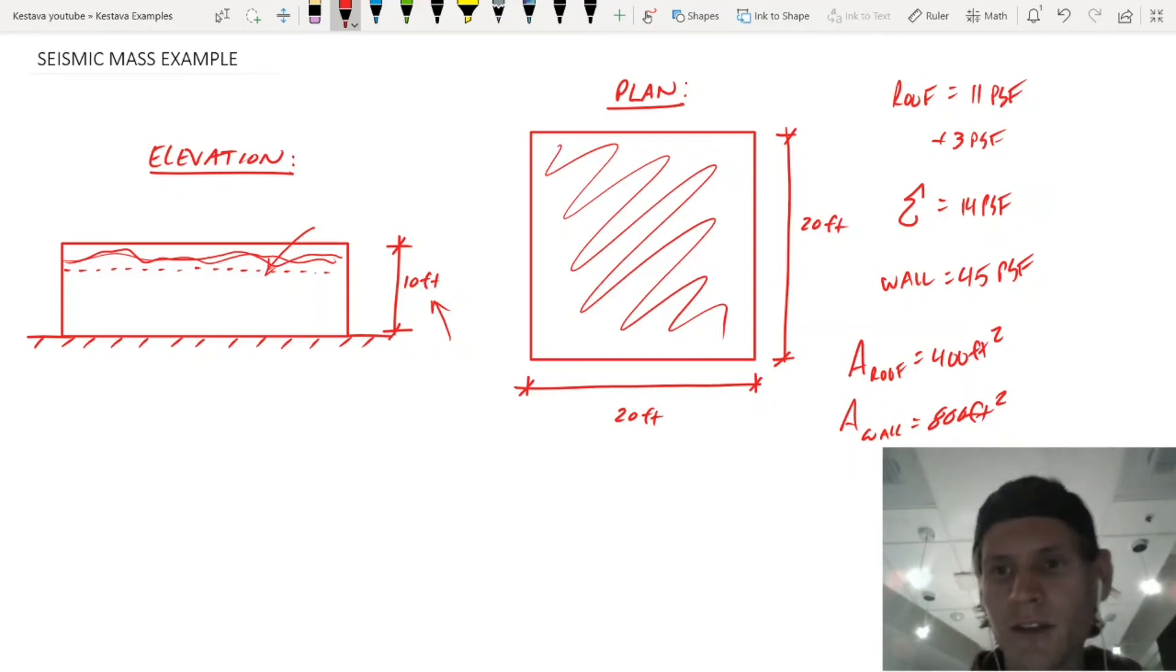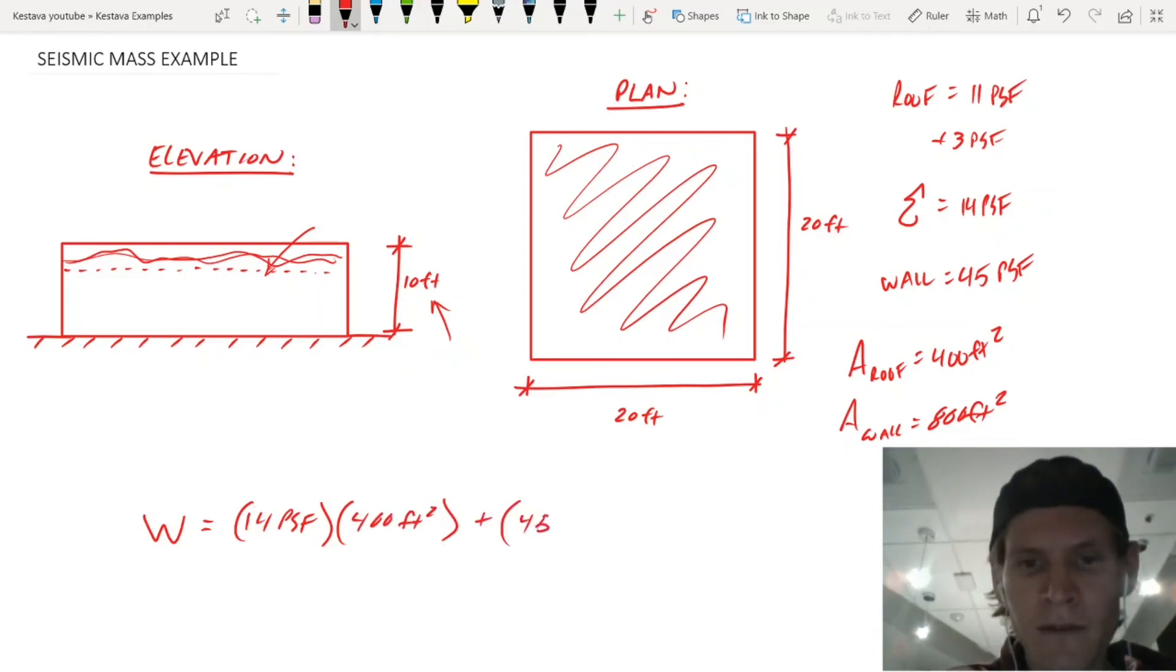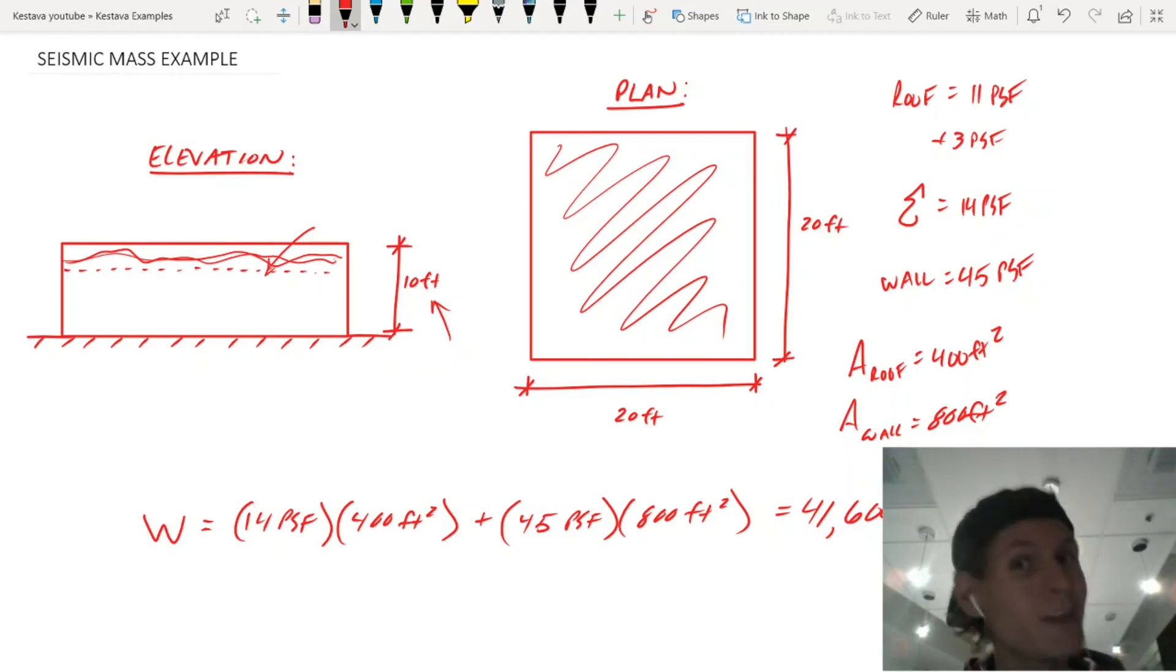And now we just multiply by our two factors here. So weight, our seismic weight is going to be 14 PSF times the area of our roof, which is going to be 400 square feet plus 45 PSF, our exterior walls, times 800 square feet because that's how much exterior wall we have. That is going to equal 41,600 pounds, which is going to equal 41.6 kips. That is your seismic weight of your single story, very straightforward building. But you know how to do it now.